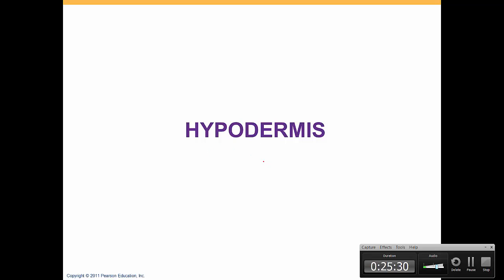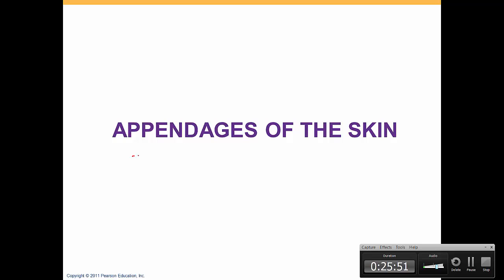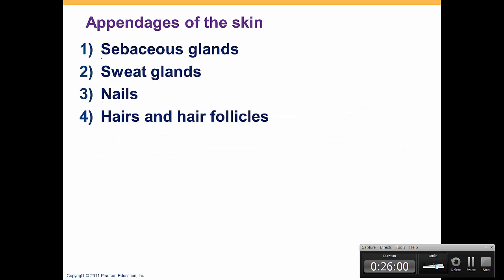The hypodermis is basically adipose connective tissue and has different names — one of these is superficial fascia. The hypodermis connects your skin to the underlying structures, which are muscles for the most part. Now we will talk about the appendages of the skin, and the singular of appendages is appendix. These appendages include the sebaceous glands, sweat glands, nails, and hairs.